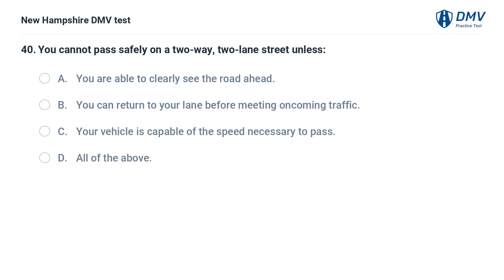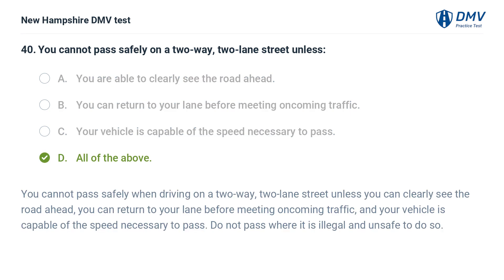You cannot pass safely on a two-way, two-lane street unless: A) you are able to clearly see the road ahead, B) you can return to your lane before meeting oncoming traffic, C) your vehicle is capable of the speed necessary to pass, D) all of the above. The answer is D. You cannot pass safely unless you can clearly see the road ahead, you can return to your lane before meeting oncoming traffic, and your vehicle is capable of the speed necessary to pass. Do not pass where it is illegal and unsafe to do so.